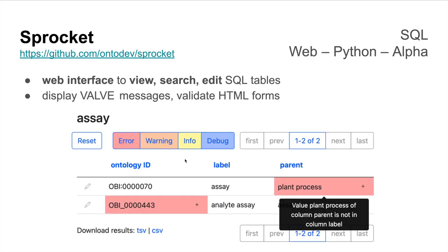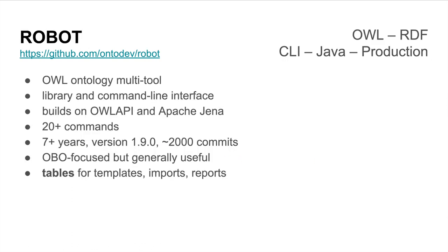Sprocket is a web interface for the Valve tool, and so it lets you view, search, or edit a SQL table that we've built with Valve, see the highlighting messages, and also edit these things.